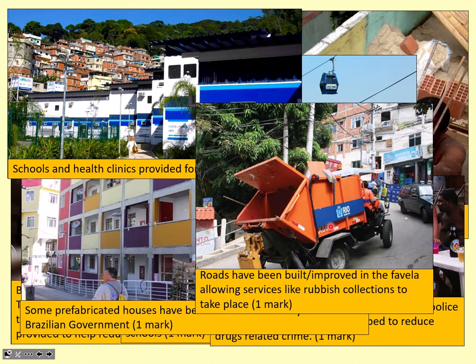So just to pause there — what you should do is re-watch this part of the lesson, pause on each picture, and note down the marks that are scored. When you put this together into a model answer, you should start your answer with 'In Rio de Janeiro, the following developments have taken place,' and then go through your notes to produce the answer.